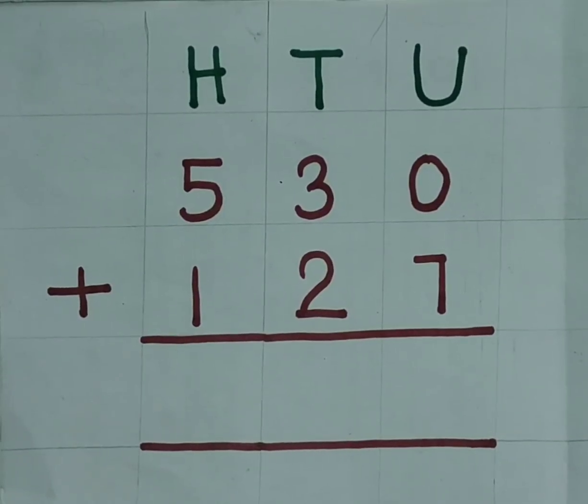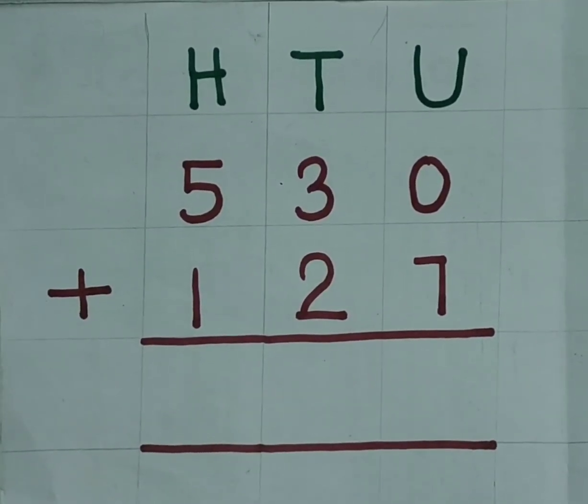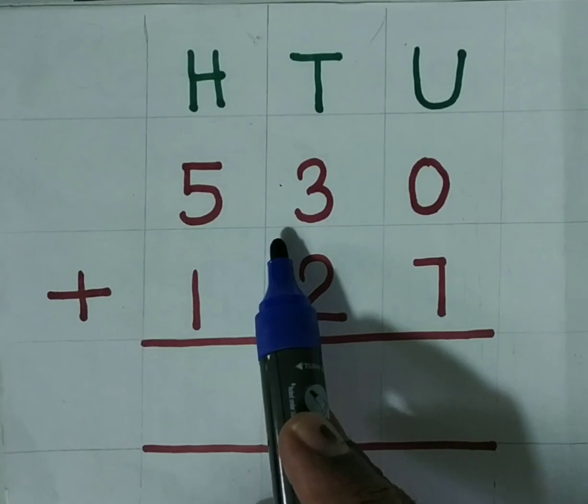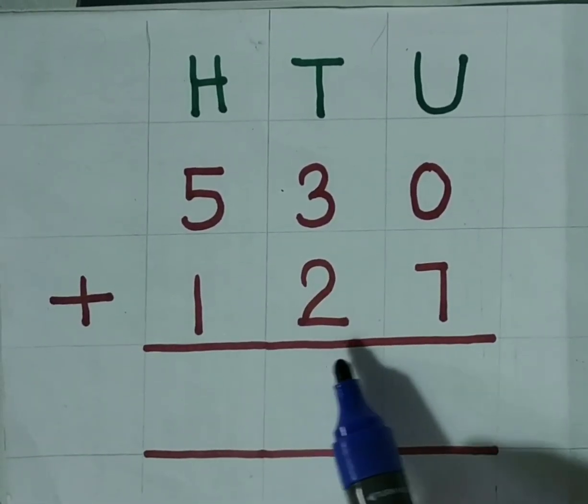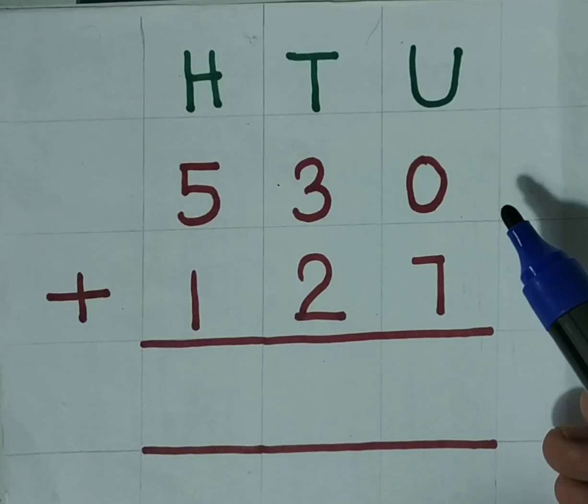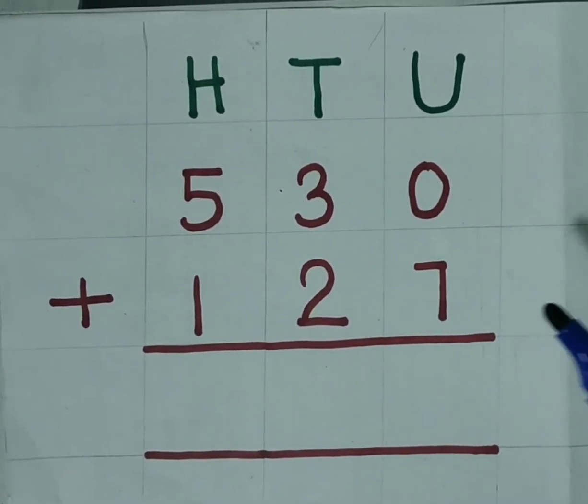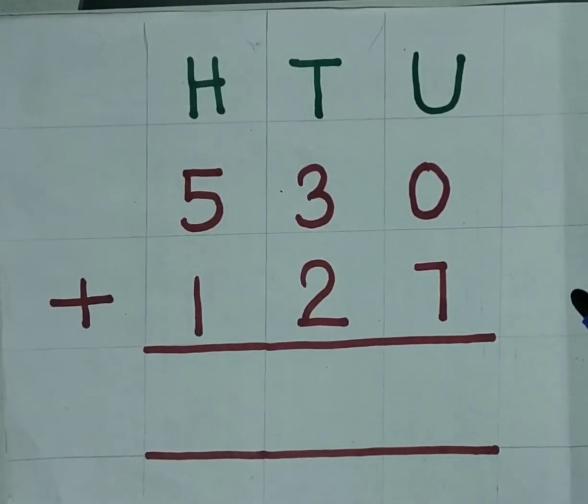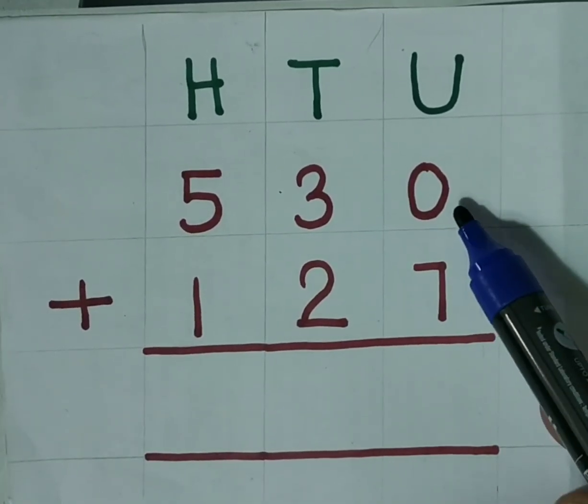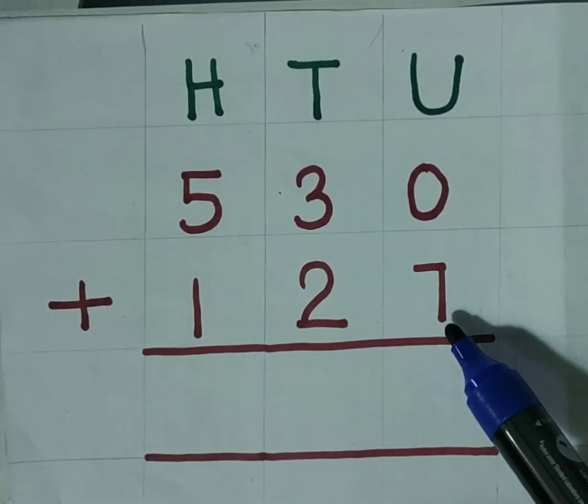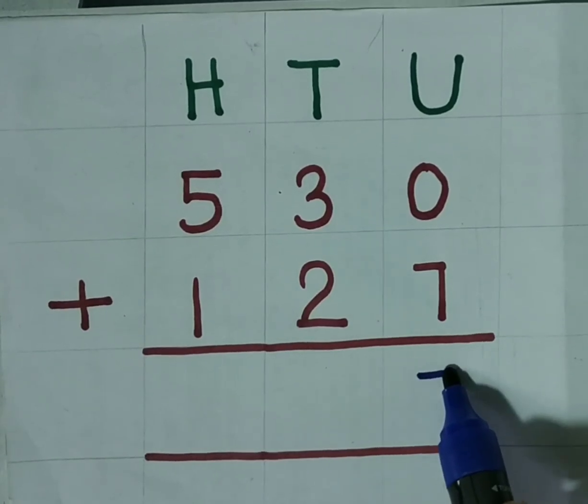Hello children, we will start the addition first. 530 plus 127. Addition we have to begin from the unit place. 0 plus 7. 0 plus any number is same number. That is, we will get 7 here.